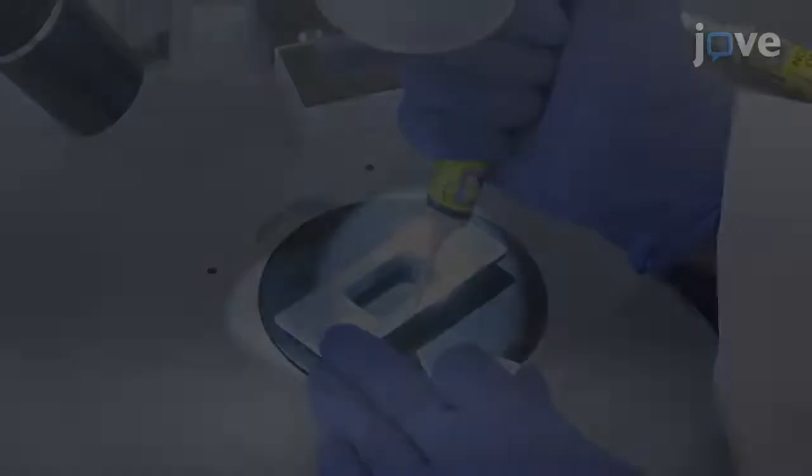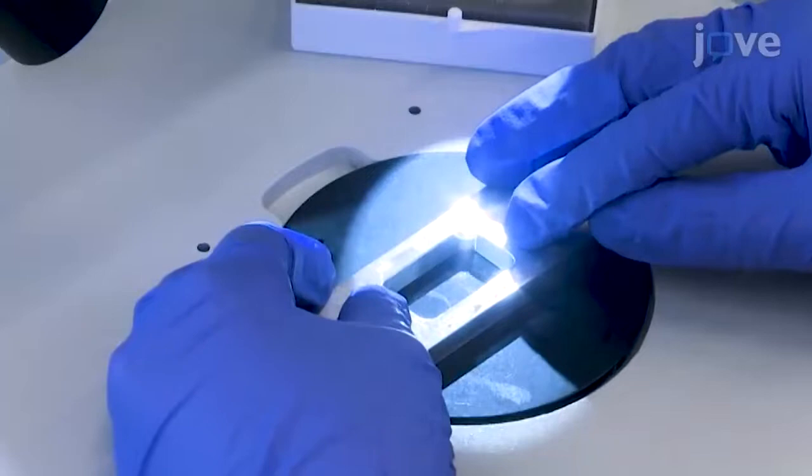After constructing an aluminum block from a machine shop, seal the bottom of the metal frame using a long coverslip with UV glue. Cure the UV glue using a handheld UV lamp for 30 seconds.